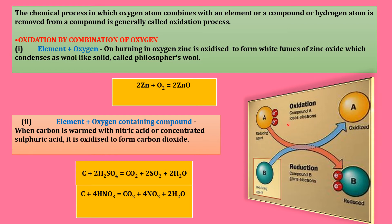Now let's move to the diagram portion. By an arrow diagram, I have tried to show you what is oxidation and what is reduction. On the basis of electron theory: oxidation is where compound A loses electrons, and reduction is where compound B gains electrons. B is the oxidizing agent and A is the reducing agent — just the opposite occurs. So A is oxidized and B is reduced.